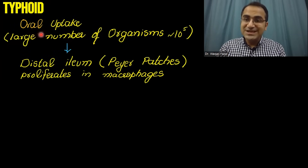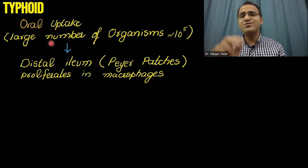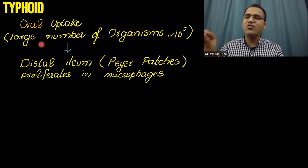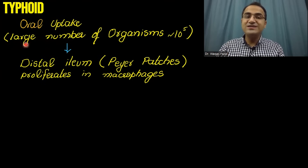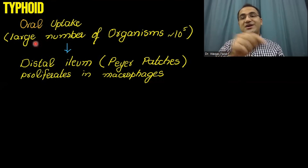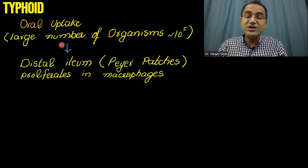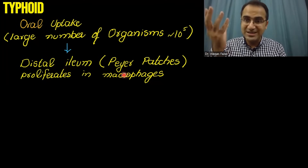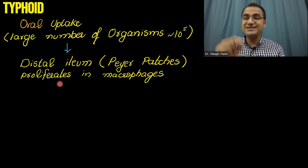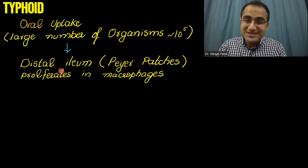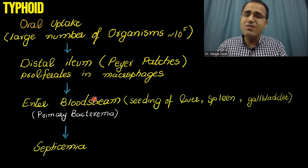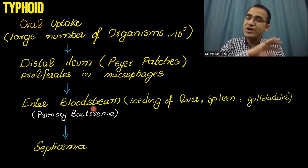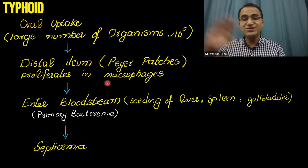Whenever a person ingests food contaminated with Salmonella, a large number of organisms are required to cause infection — unlike Shigella, where a small number of bacteria can cause infection. In typhoid, these bacteria travel to the distal ileum, reside and proliferate in the Peyer's patches, in the M cells and macrophages. From there, they enter the bloodstream — that is the primary bacteremia.